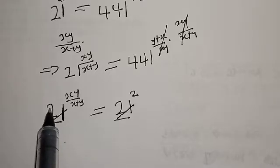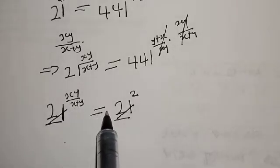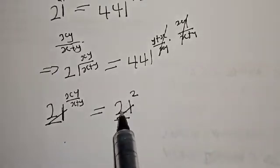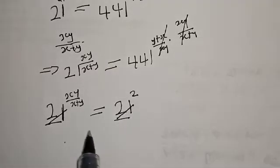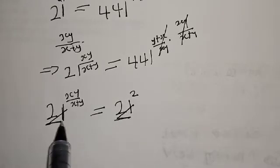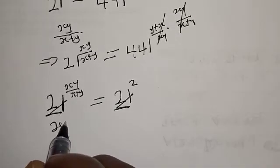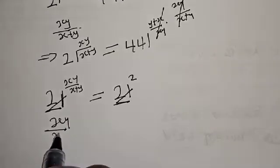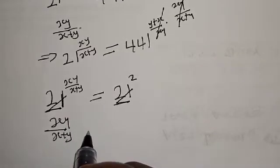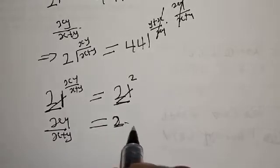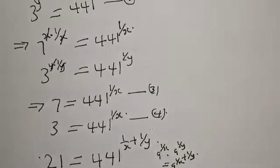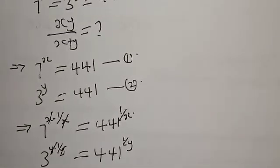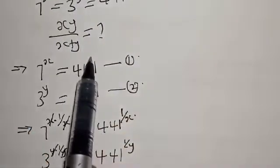Now, 21 raised to power x·y over x plus y is equal to 441, which is the same as 21 squared. Since they have the same base, we are left with x·y over x plus y equal to 2. And remember, the question asks us to find the value of x·y over x plus y.